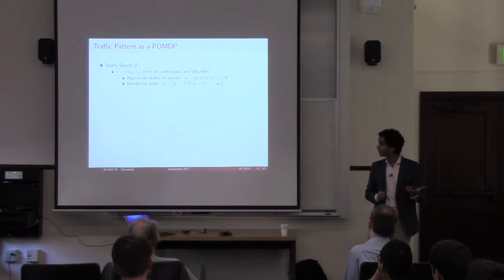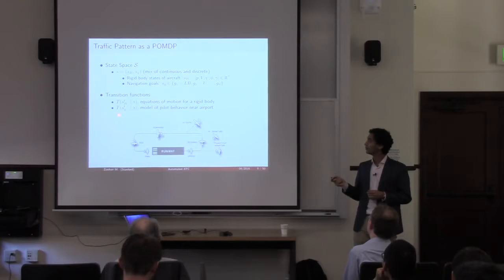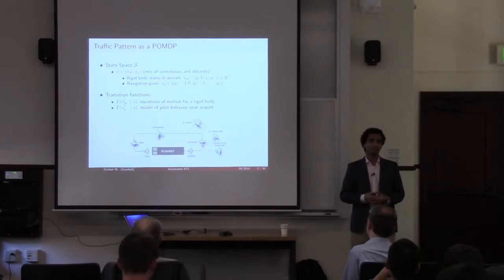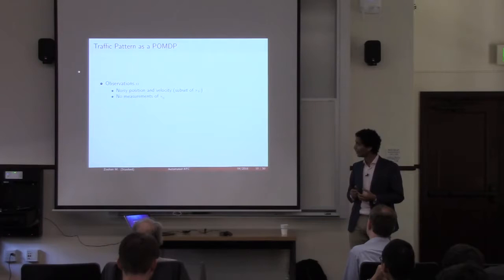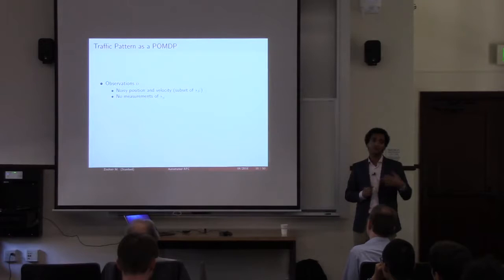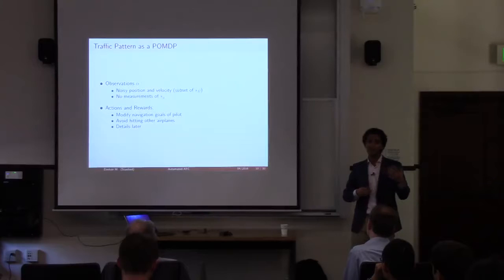The transition functions for the rigid body are determined by the nonlinear equations of motion. For pilot behavior, we find probabilities of navigation goal transitions — given the pilot is in the upwind, what is the probability they'll fly crosswind versus depart? For observations, we assume they are a subset of rigid body states — noisy position and velocity measurements — but we have no direct measurement of the pilot's navigation goals. As a preview, the actions will try to modify the navigation goal of pilots, and rewards simply mean: don't hit other airplanes.